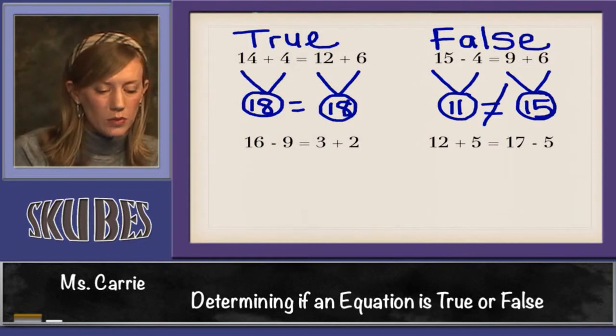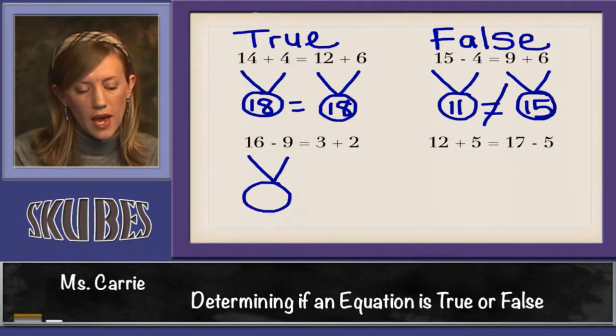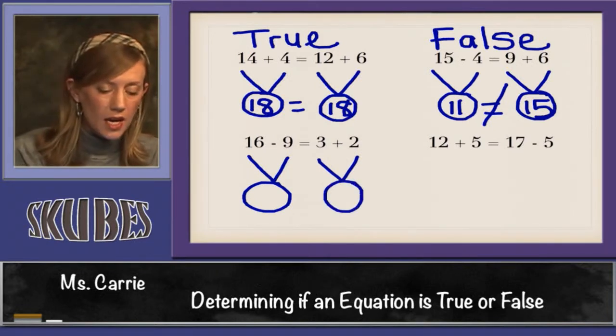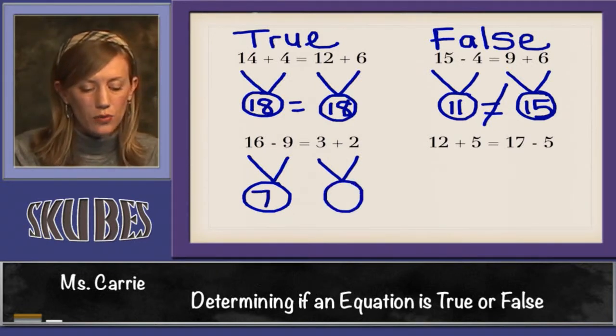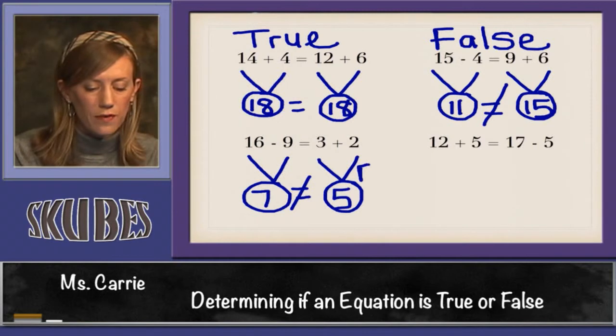Let's look at these next ones. We have 16 minus 9 and we have 3 plus 2. Well 16 minus 9 is 7 and 3 plus 2 is 5. These are not equal to one another so this would be false.